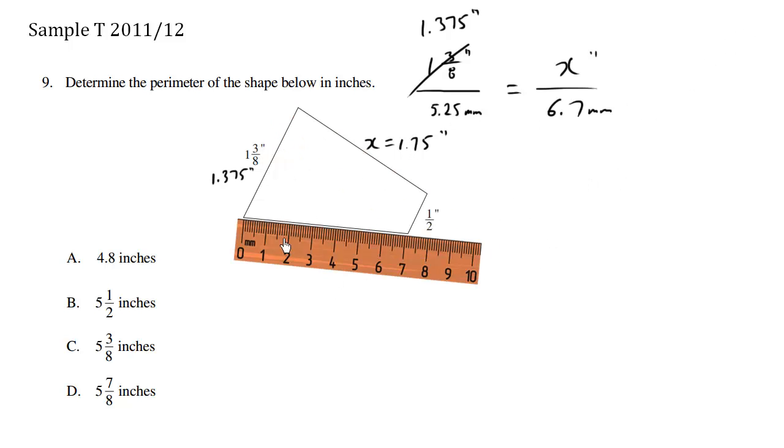And we continue with the same technique measuring this side over here. So our previous ratio was 1.375 inches measured at 5.25 millimeters is equals to, and then here we're measuring approximately 7.1 millimeters. And we're trying to solve for, we'll just call this y. So this length here is y. And we can solve how many inches y is.